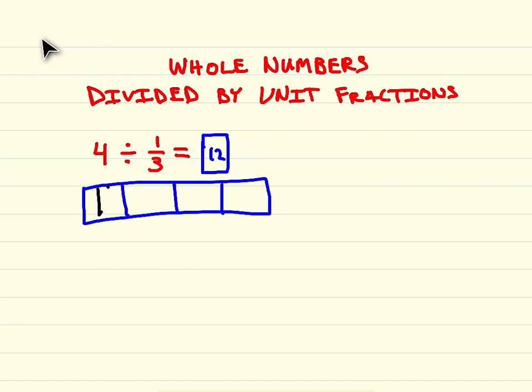And your quotient will be the number of pieces that you have or the number of rectangles you have. And we have one, two, three, four, five, six, seven, eight, nine, ten, eleven, twelve, twelve rectangles. Therefore, your quotient is twelve.